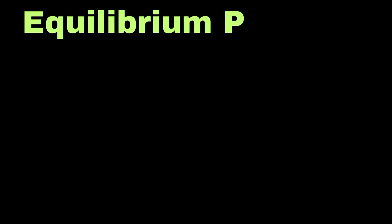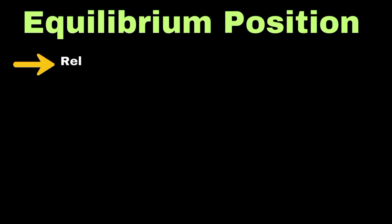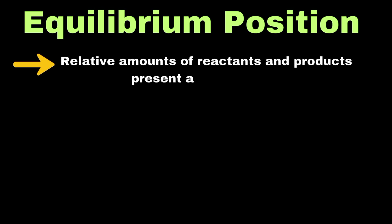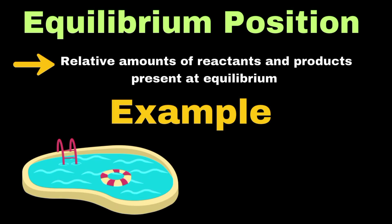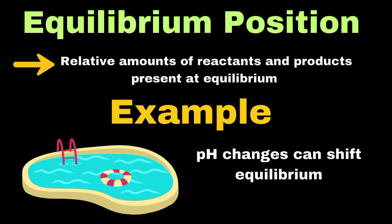Let's explain the concept of equilibrium position. Equilibrium position can be defined as the relative amounts of reactants and products present at equilibrium. Let's take the example of a swimming pool's chlorination system. The position of equilibrium between chlorine and its ionic forms in water determines the pool's sanitizing effectiveness. pH changes can shift this position, which is why maintaining proper pH is crucial for pool maintenance.